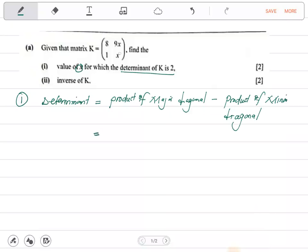So major is this times that. We have 8x. When we multiply, we get 8x. Minus minor is this one. 1 times 9, we get 9x. They are saying this is equal to 2. That's what they're telling us.